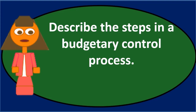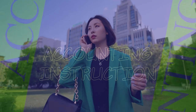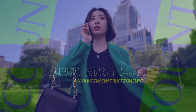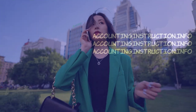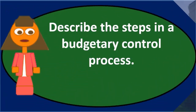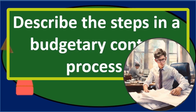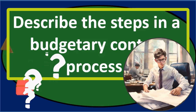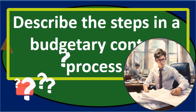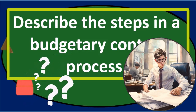In this discussion we will discuss the question: describe the steps in a budgetary control process. When we see a discussion question or essay question like this, our goal is really to expand on it. We would rather write more rather than less, because in an essay question we're more likely to pick up the points being looked for, and if we write more than is asked, we usually don't lose points for that.